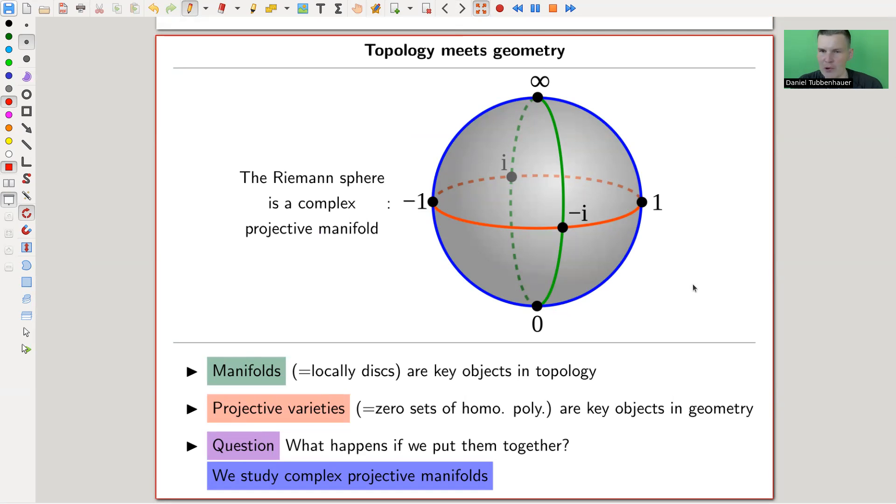But let me try to motivate it. So topology meets geometry. In topology, what topologists really study, it's really strange. If you look at what was taught in university, most people think topology is something like set-based topology. When it's really not, it's really about manifolds, actually. So manifolds are the key objects in topology. Topological spaces are just too wild. There's not much you can say about topological spaces in general.